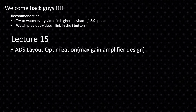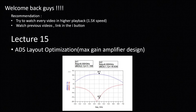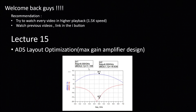Welcome back. In this lecture we will do the ADS layout optimization. We are doing optimization because in our last lecture, lecture 14, we came across this result. This problem was taken from lecture 11. We are designing a maximum gain amplifier and from our calculation we have seen that we can get up to 11.38 dB of gain, and we have achieved that in our schematic design.